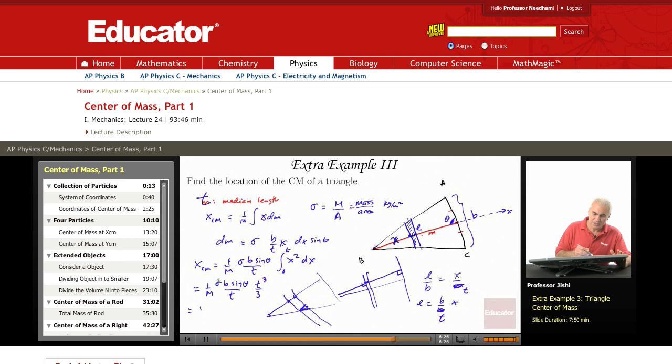So it becomes 1 over m sigma, but sigma over m is 1 over the area. So that's 1 over the area, b t squared sine theta over 3.